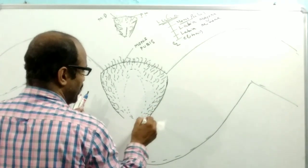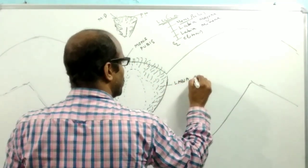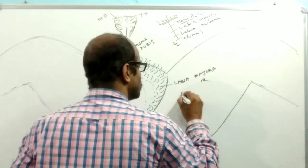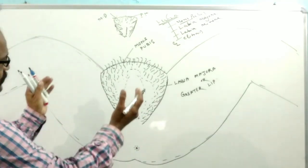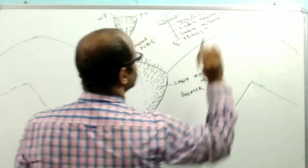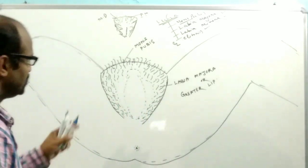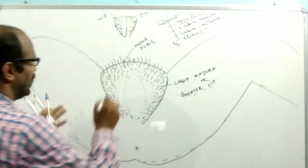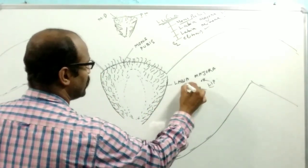The labia majora extends from mons pubis. This is also known as the greater lip. Such greater lip or the labia majora encloses the different parts of the external genitalia like labia minora, clitoris, and the opening of the vagina and the urethra. The outer surface is rough, provided with pubic hairs which persist throughout life.